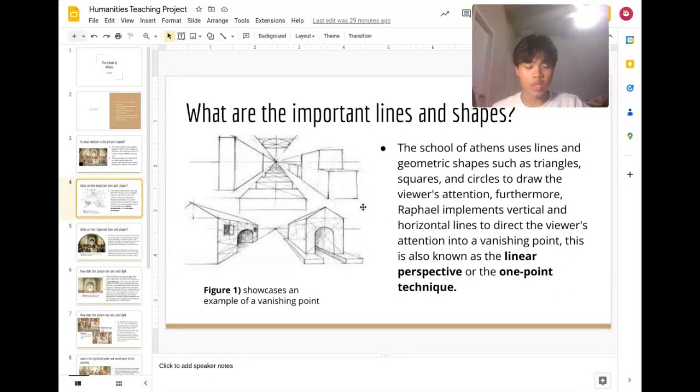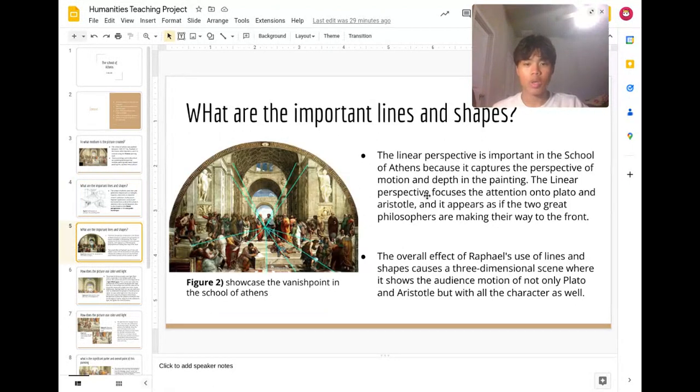What this one point technique or linear perspective does is it draws the viewer's attention into one part of the painting or picture. The linear perspective is important in the School of Athens because it captures the perspective of motion and depth in the painting. The linear perspective focuses the attention onto Plato and Aristotle.